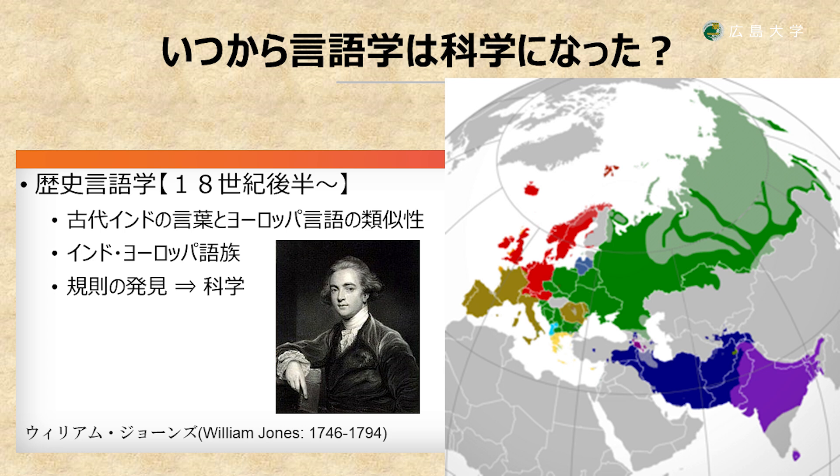言語学が科学になったのは18世紀後半から始まる歴史言語学がその始まりであると一般的に言われます。18世紀後半にウィリアム・ジョーンズという人が、古代インドの言葉であるサンスクリットとヨーロッパ言語に規則的な音の対応があるとの指摘を行ったことから歴史言語学が始まります。このような規則の発見は一種の科学であり、この古代インドの言葉とヨーロッパ言語はインド・ヨーロッパ語族というグループで現在では知られています。